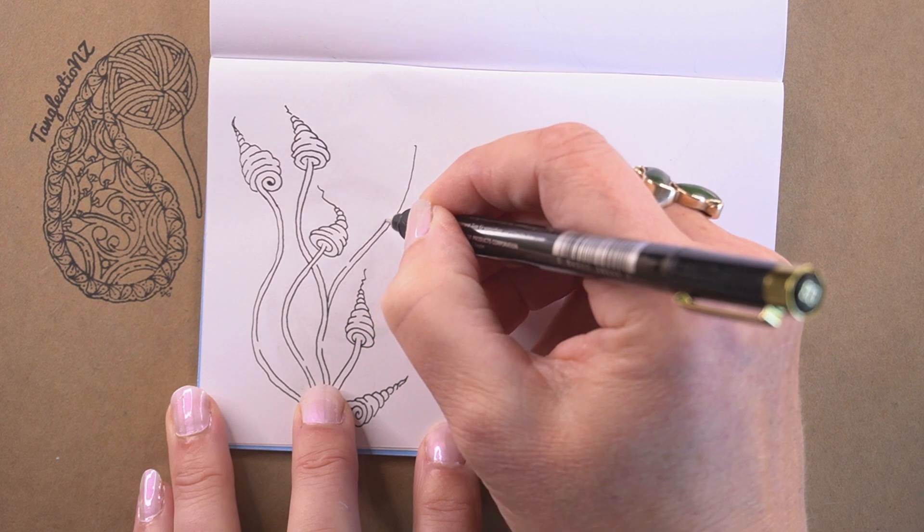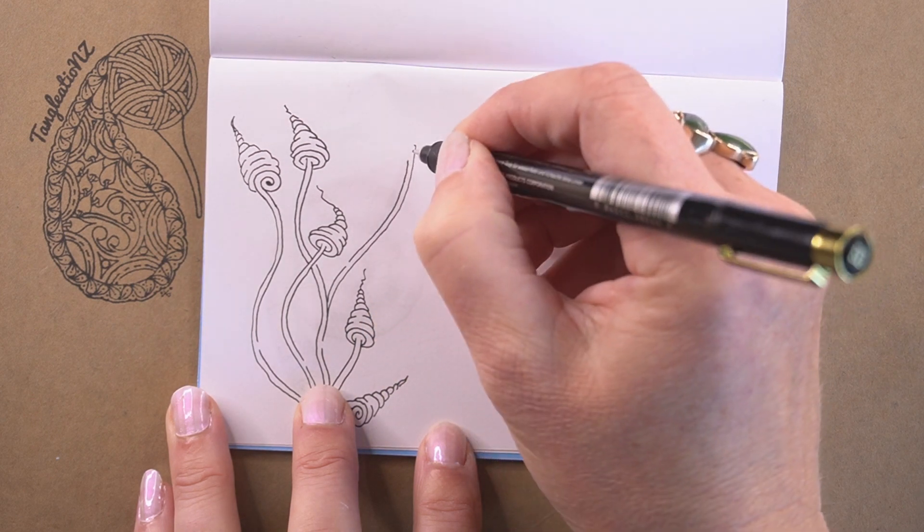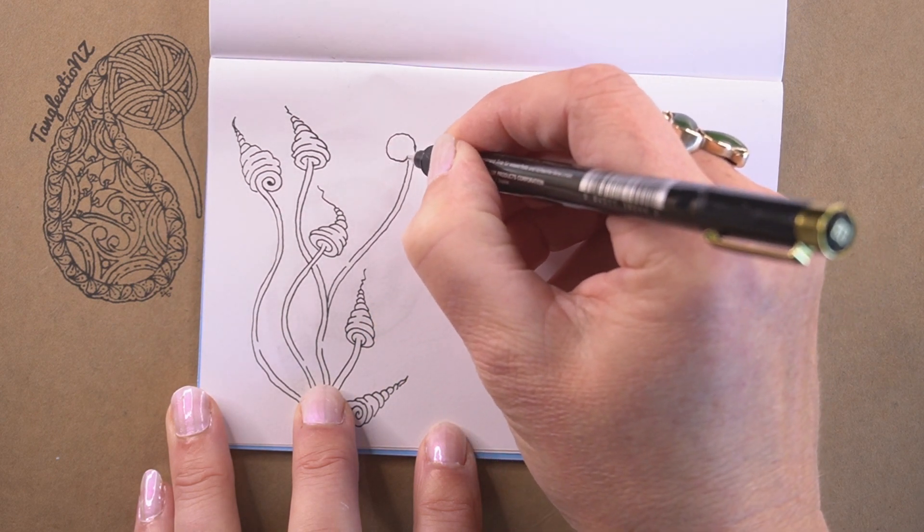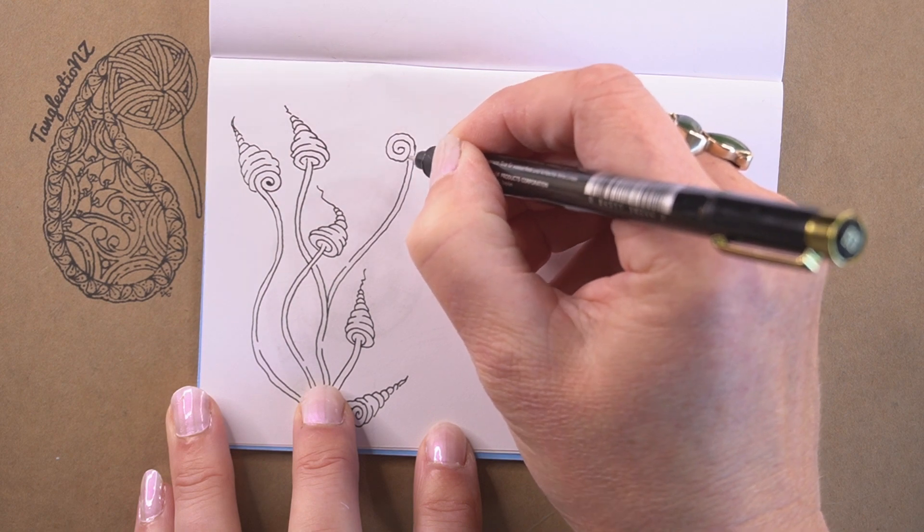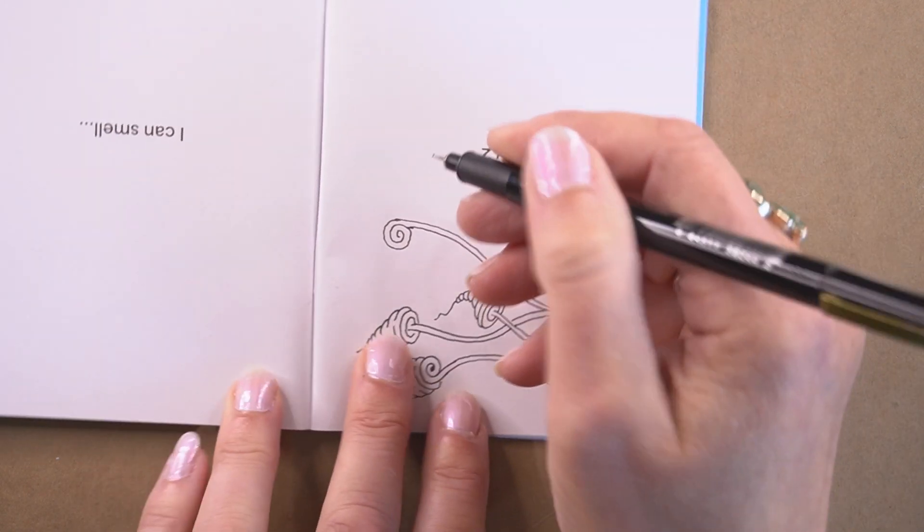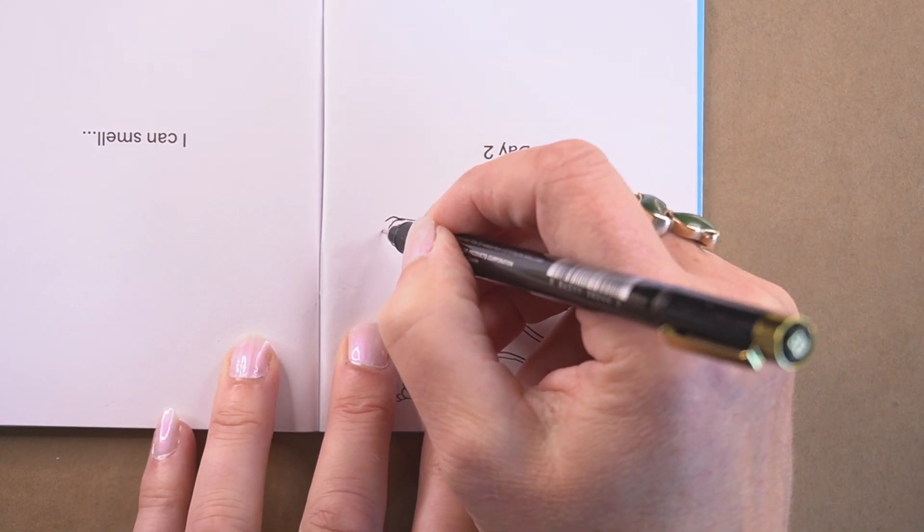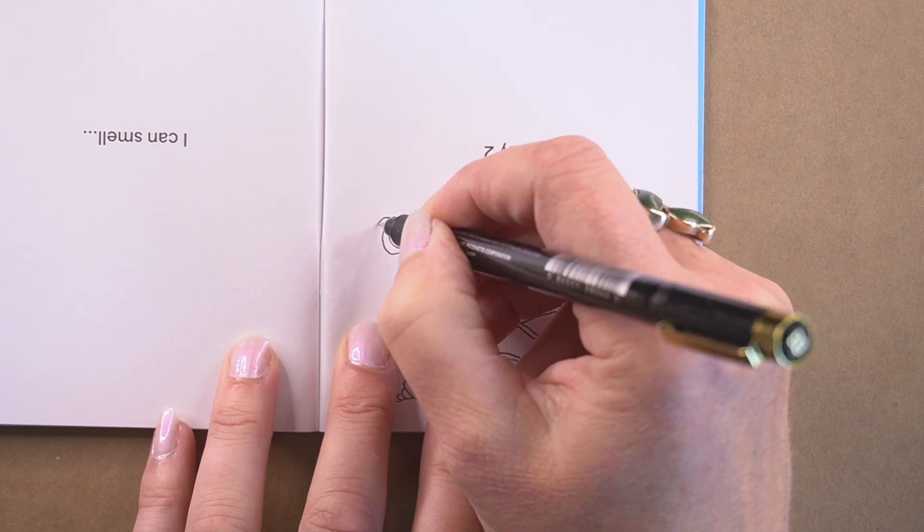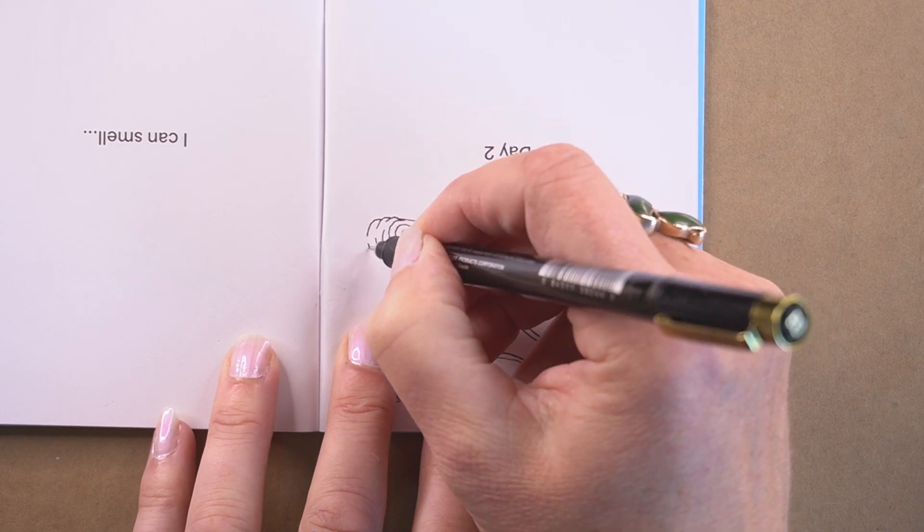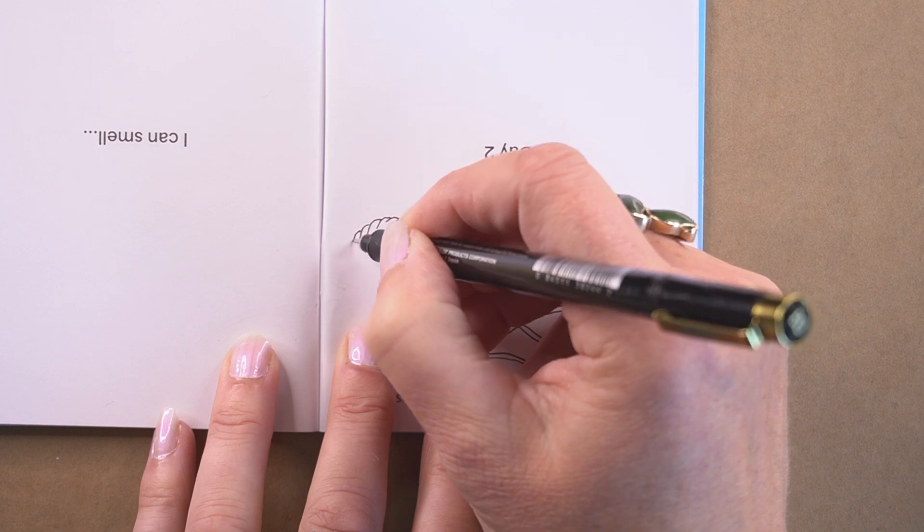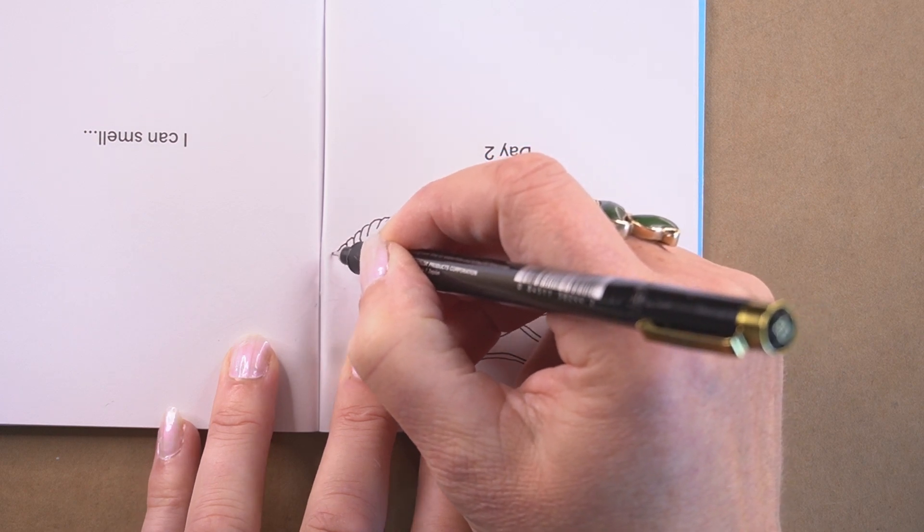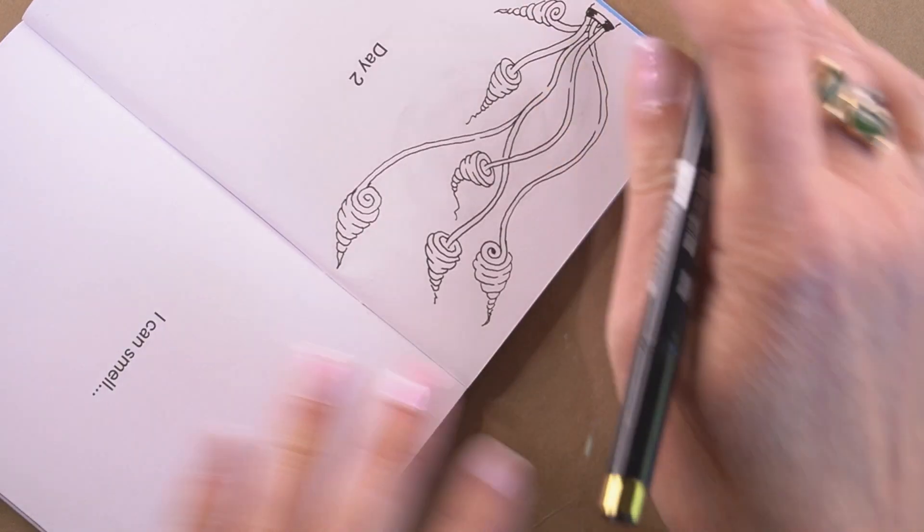Each time you add a new individual element on this tangle, just gently focus on where your pen is going, heading out across the page carefully, thoughtfully, and with a bit of focus.